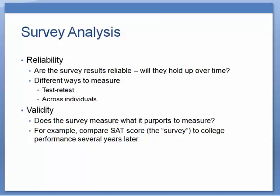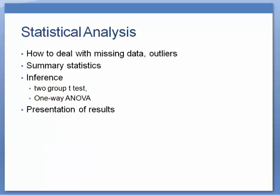Then we move on to statistical analysis. It covers such topics as how to deal with outliers and missing data, producing summary statistics, and what many people think of as the classic statistics — a t-test or an ANOVA test to determine whether or not the results of a survey are different from what a chance model might predict.